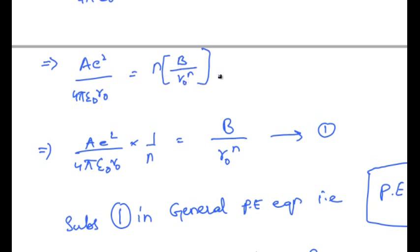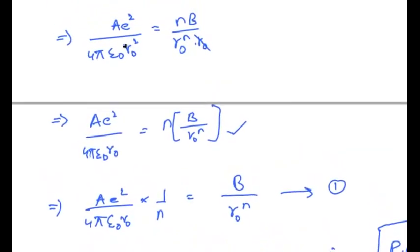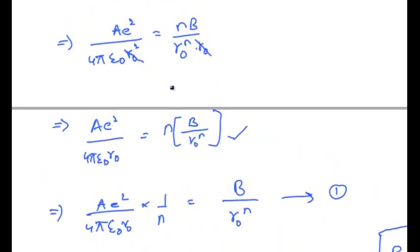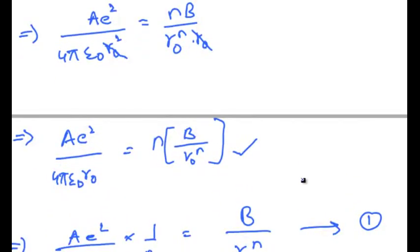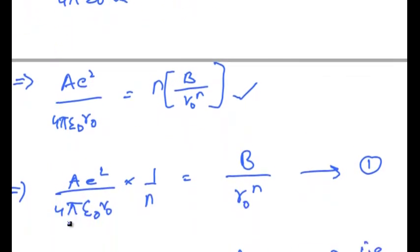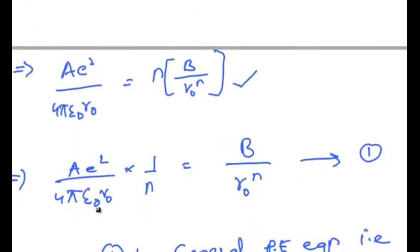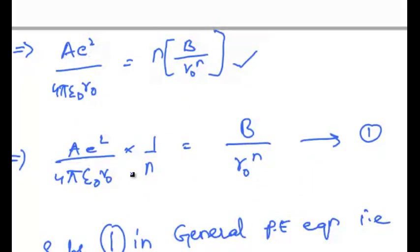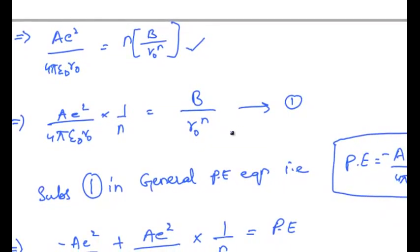Canceling r naught on both sides, that implies a e square by 4 pi epsilon not into r naught into 1 by n is equal to b by r naught power n. Let us call this equation 1.